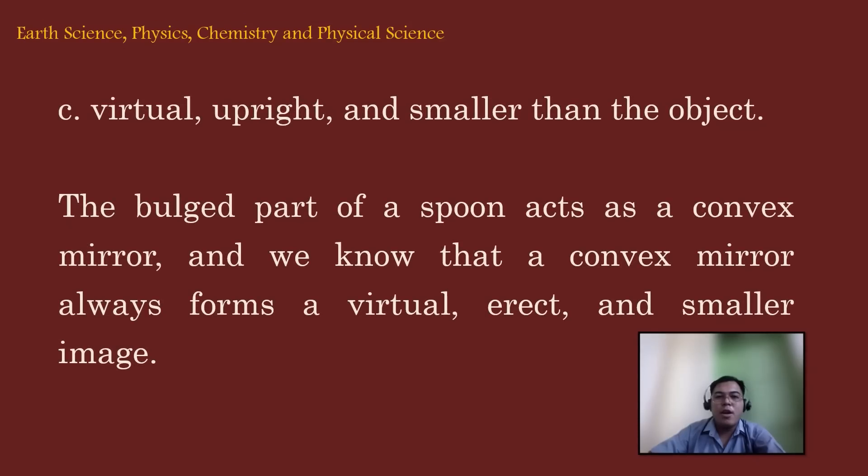The correct answer is letter C. Virtual upright and smaller than the object. Now, the bulge part of the spoon acts as a convex mirror. And we know that a convex mirror always forms a virtual, erect and smaller image.